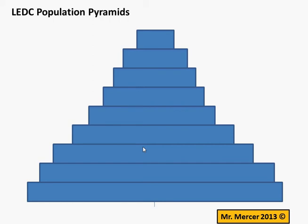The bottom of the graph is wide because a lot of babies are being born. The top is narrow because a lot of people are dying very rapidly. The quicker the shape of the pyramid narrows, the more rapidly people are dying.